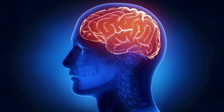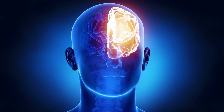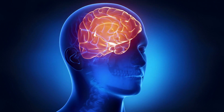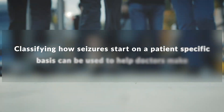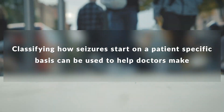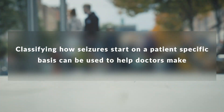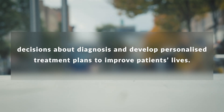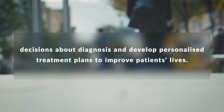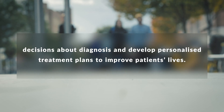Seizure type is grouped by the parts of the brain that are affected and how the activity spreads. Classifying how seizures start on a patient-specific basis can be used to help doctors make decisions about diagnosis and develop personalised treatment plans to improve patients' lives.